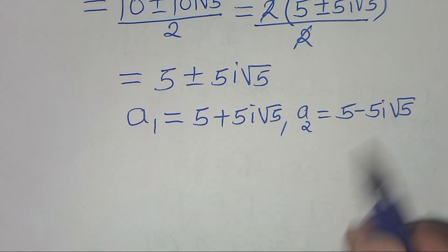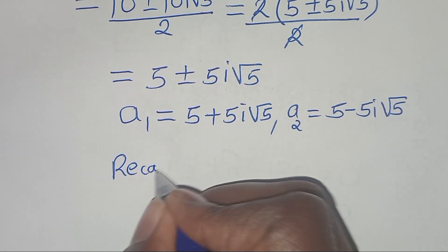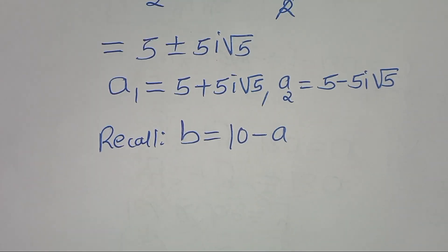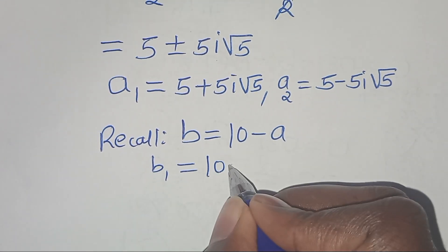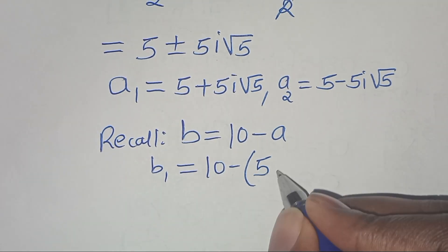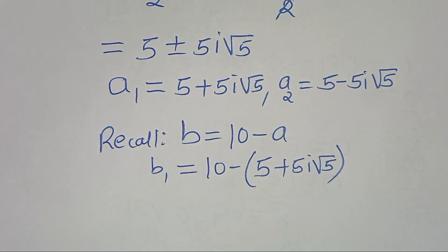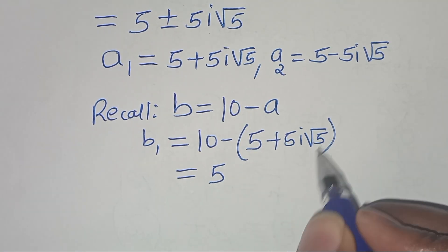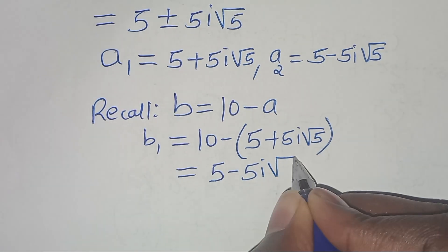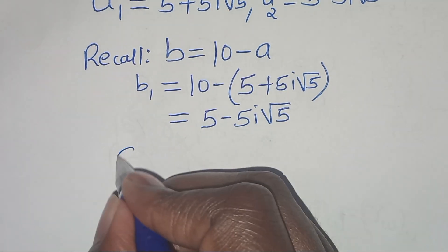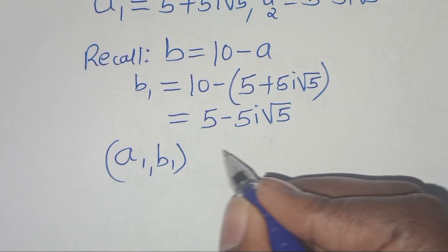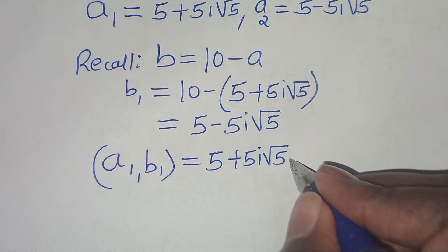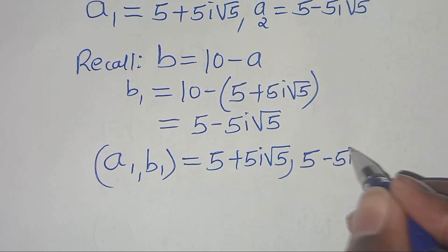Let's solve for the corresponding values of B — B1 and B2. Recall that b equals 10 minus a. So B1 equals 10 minus A1, which is 10 minus (5 plus 5i√5). This gives 10 minus 5, which is 5, minus 5i√5. So the first solution set A1, B1 is (5 plus 5i√5, 5 minus 5i√5).